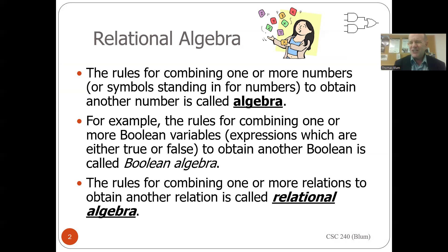We're going to do what's called relational algebra. Think about regular algebra learned in school — you have rules for combining numbers or symbols standing in for numbers, and those rules make up what we call algebra. If you combine Boolean variables — things that are true or false — you have Boolean algebra. What we're going to talk about here is things you can do with relations or tables: relational algebra.